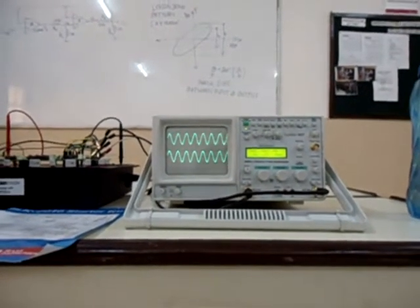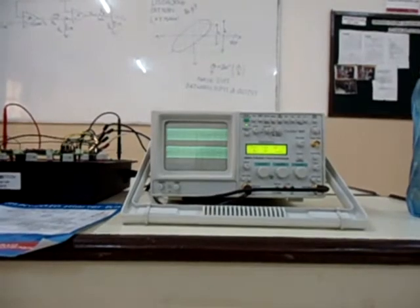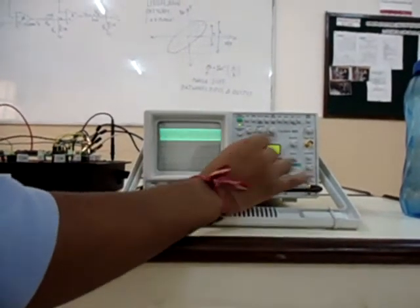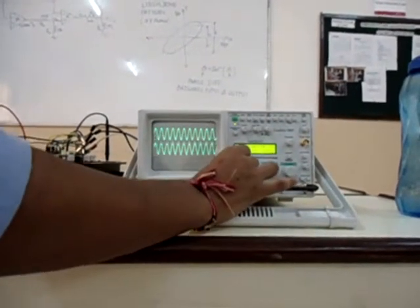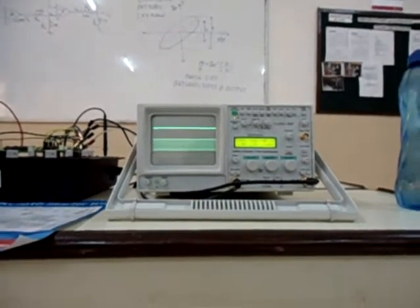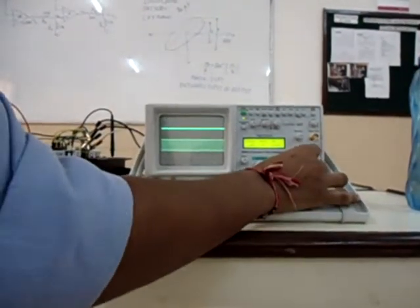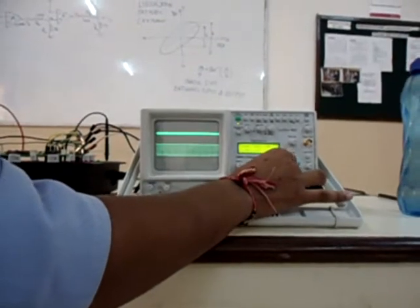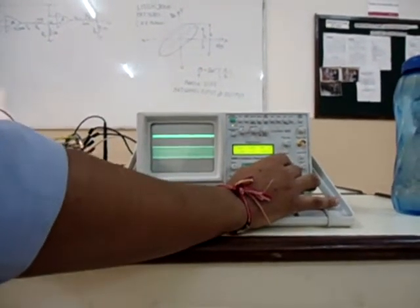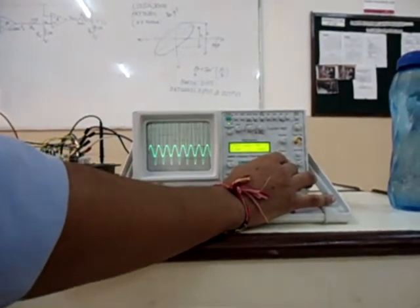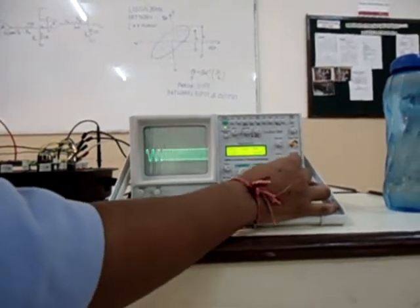Increasing the frequency and going up to 1 megahertz frequency we can take the readings and get the values of gain to plot the frequency response curve. The cutoff frequency comes near 240 kilohertz.